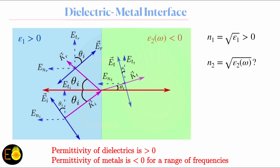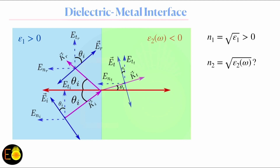But N2 equals the square root of epsilon2, which is less than zero for a range of frequencies. Does this mean the refractive index will be imaginary or complex? We will figure this out in the next video. If you are interested to know what happens when a metal is placed alongside a dielectric medium, stick to my channel. Until then, thank you very much.